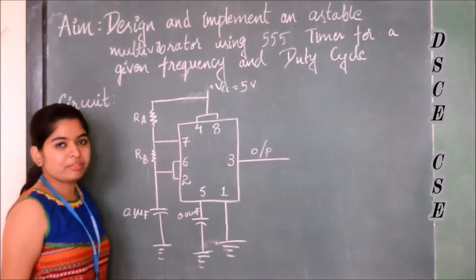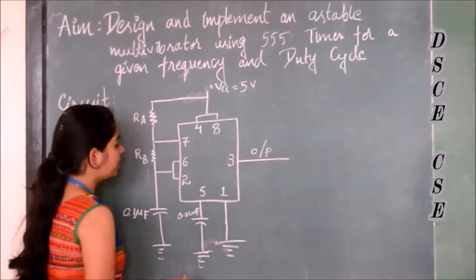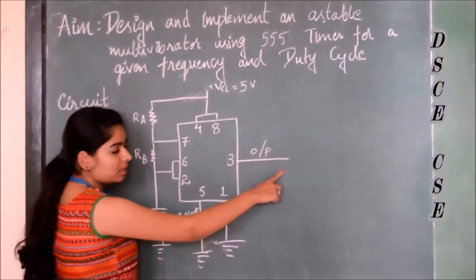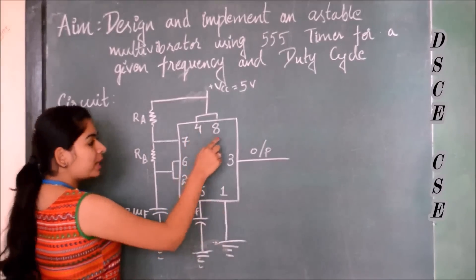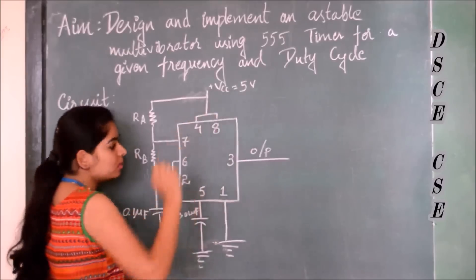The IC which we use here is 555 timer. Pin number 1 is connected to ground directly, pin number 2 and 6 are shorted, pin number 3 is taken as the output, pin number 4 and 8 are shorted and connected to VCC. Here the VCC is 5 volts.